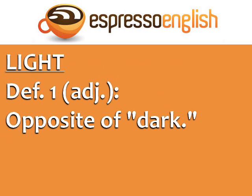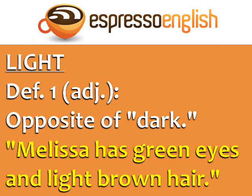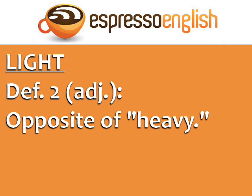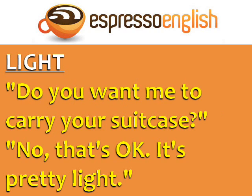Light. Definition 1: Adjective – opposite of dark. Example: Melissa has green eyes and light brown hair. Definition 2: Adjective – opposite of heavy. Example: Do you want me to carry your suitcase? No, that's okay. It's pretty light.